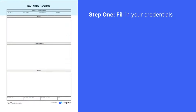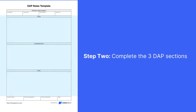The first step to creating DAP notes is to fill in patient credentials at the top. This includes their first and last name, date of birth, and their ID. Next, you'll need to fill out all three DAP sections, which includes the data, assessment, and plan areas.